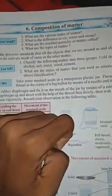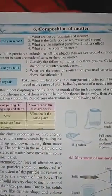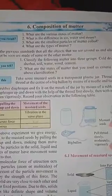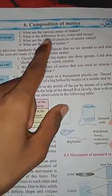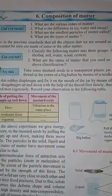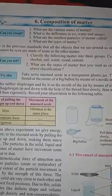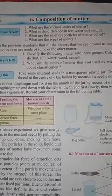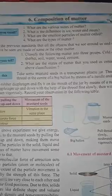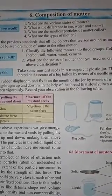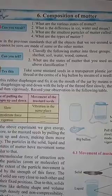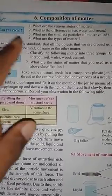The question asks: what are the various states of matter? The various states of matter are solid, liquid, and gas. What is the difference between ice, water, and steam? Ice is solid, water is a liquid, and steam is a gas.